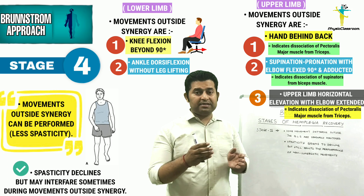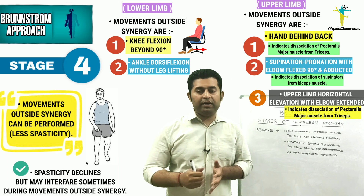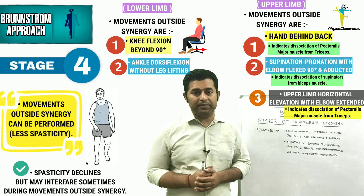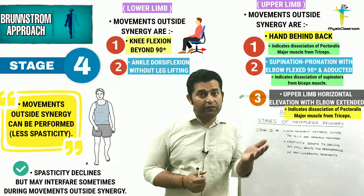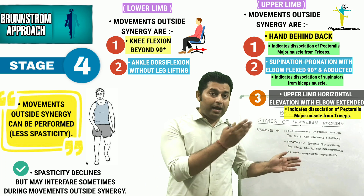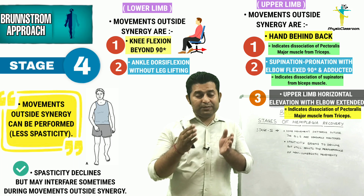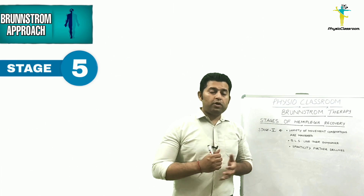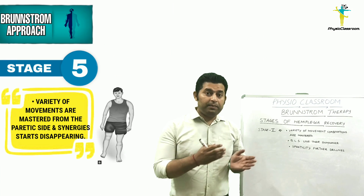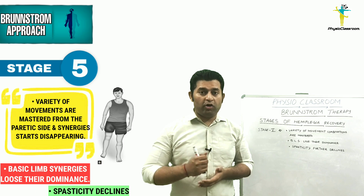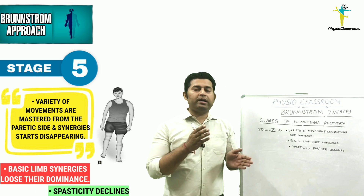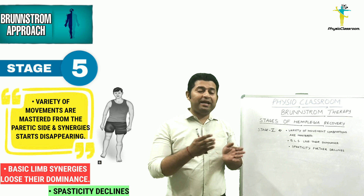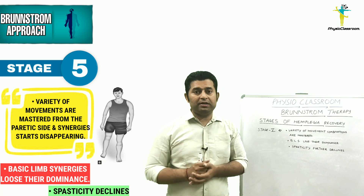In Stage 4, spasticity begins to decline but can still interfere with the performance of movements outside the basic limb synergy, meaning the patient has to put extra effort to produce these movements. Gradually, as spasticity further declines, movement becomes easier. In Brunström Stage 5, the patient can now master a variety of movement combinations and is no longer confined to just the basic limb synergies, with spasticity declining further.